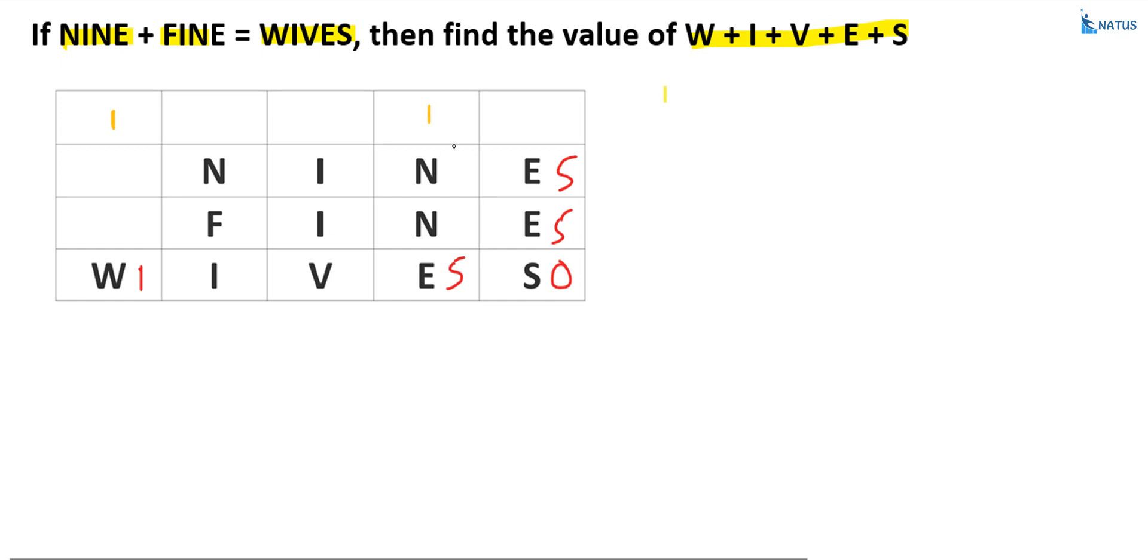If N equal to 2, 1 plus 2 plus 2, that is equal to 5. Or if N is equal to 7, then also the sum is equal to 15 and 1 carry over here. Here I will take N equal to 7, and here you will substitute the value of 7 also here. 1 plus 7 plus 7, that is equal to 15, and 1 carry over from second column to third column.